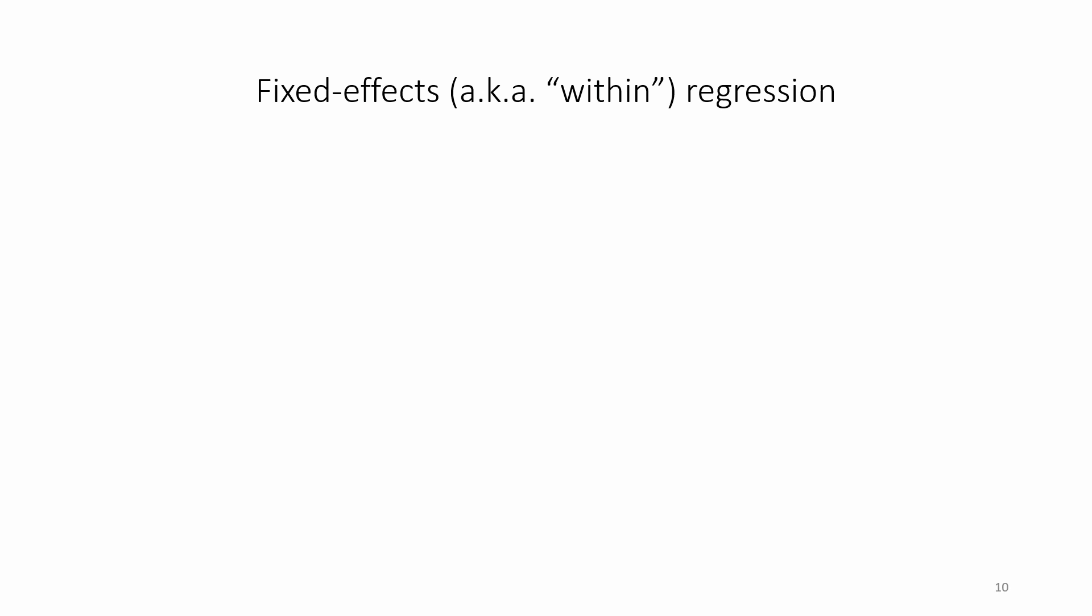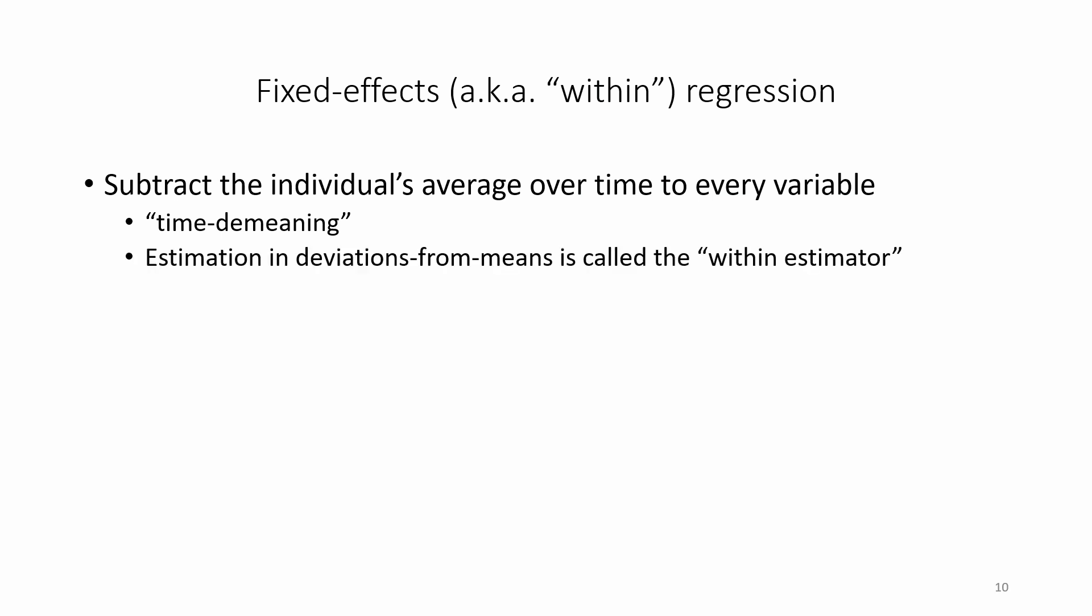A common way of estimating a panel regression is using the fixed effects regression, also known as within regression. To do this, we subtract the individual's average over time to each variable. This is known as time demeaning. It is often referred to as the within estimator because we focus on changes within an entity over time.